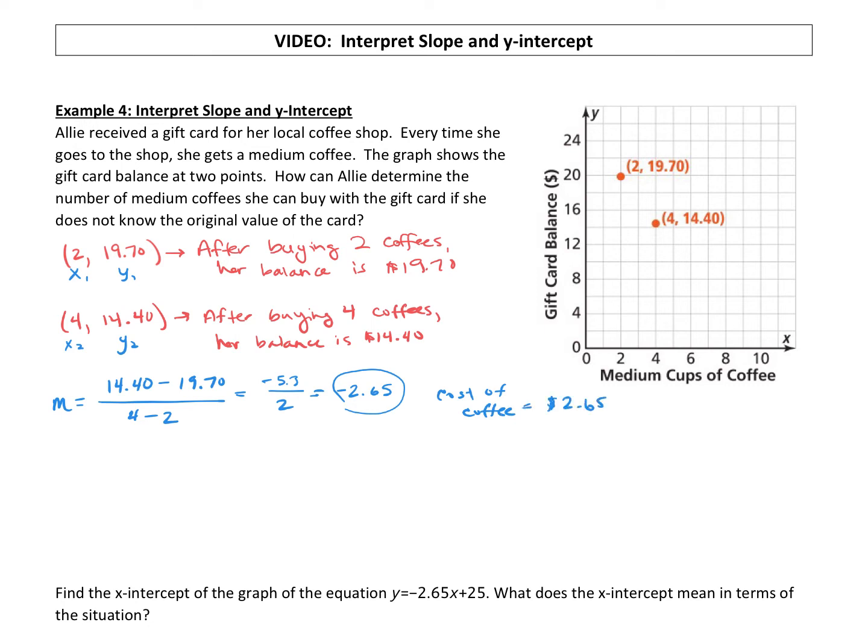All right, so we have just interpreted the slope and made sense of that. Now let's find the y-intercept so we can interpret it. To find the y-intercept, remember our nice little trick: we can use slope-intercept form, y = mx + b. We just found the slope. Now let's use—I just always grab the first point and let's plug in the x and the y and solve for b. So our y value is 19.70 equals our slope -2.65 times the x value from that ordered pair, which is 2, and then plus b. And we will solve this for b.